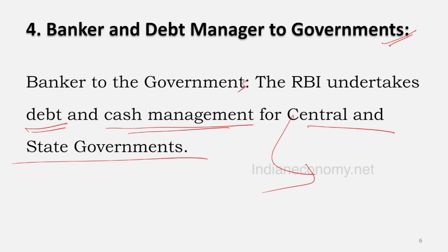The central government is one of the biggest financial entities in India — its expenditure and tax revenue are larger than many corporate entities. Revenue may come tomorrow but expenditure has to be made today, so there is a gap. Whenever that gap exists, RBI provides money to the central and state governments.